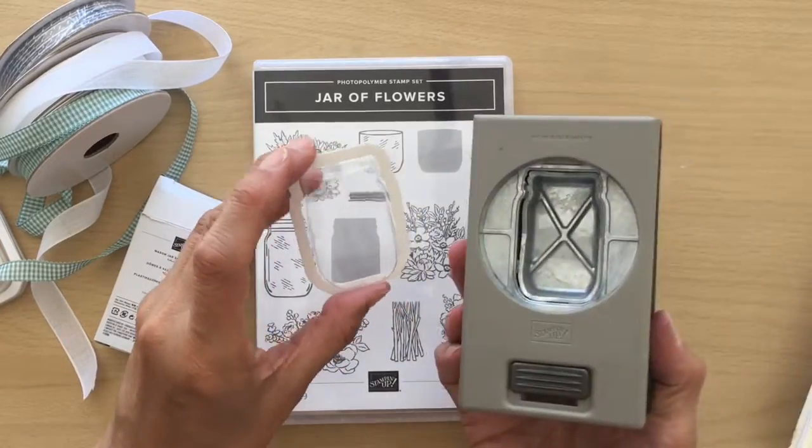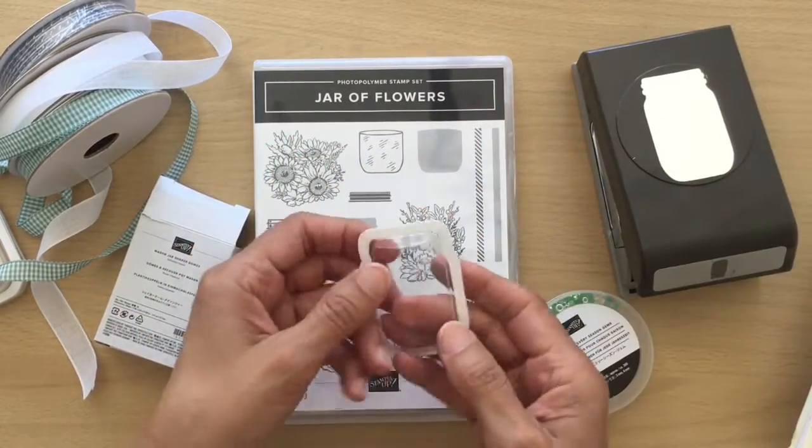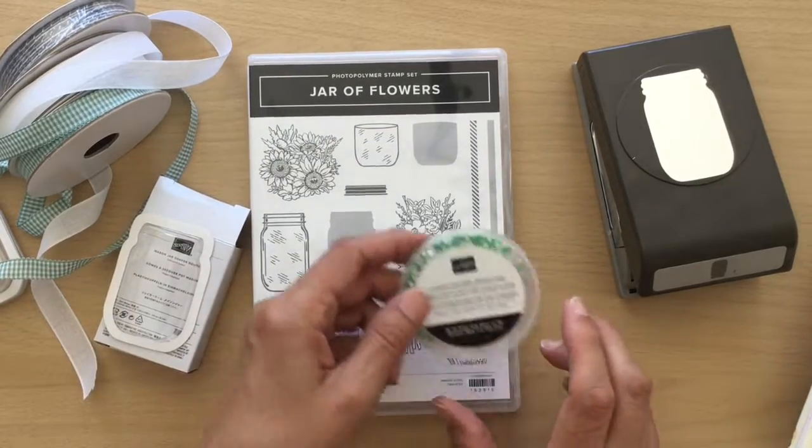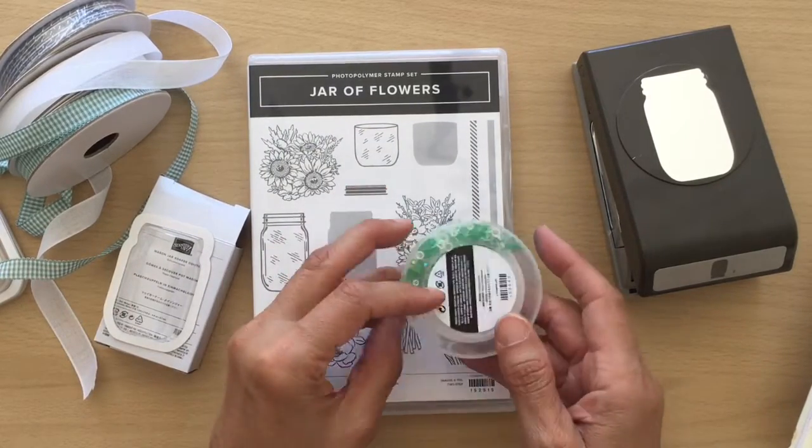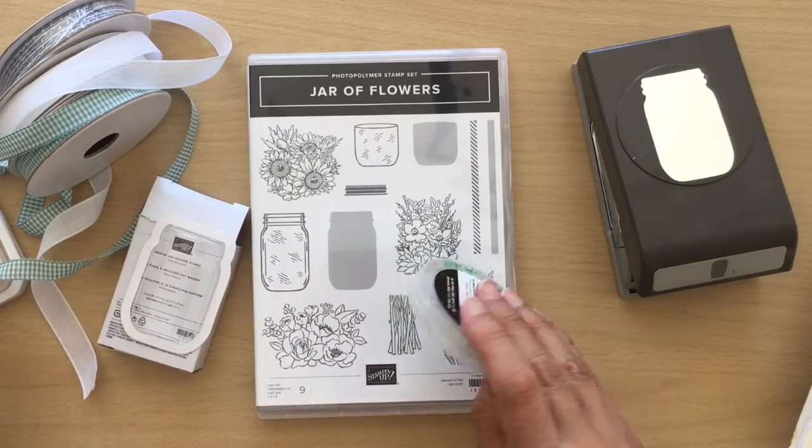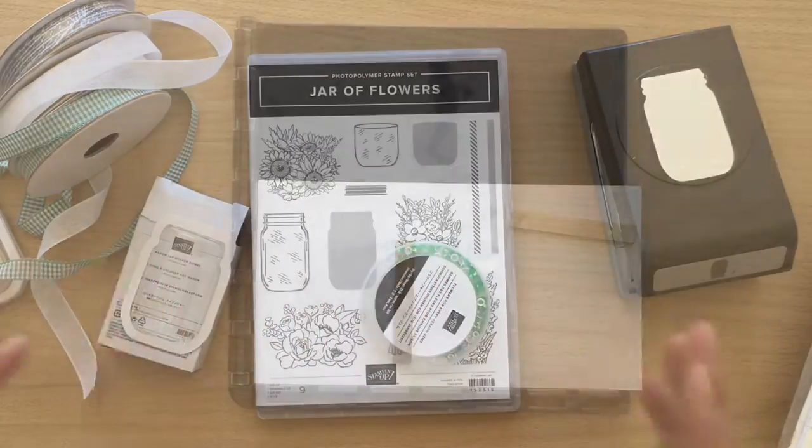These are the mason jar domes. You use your punch and then this will pop in, and we're going to be using one of these today so I can show you how to use those, and the Flowers for Every Season gems. These can go into your dome if you're going to be making a shaker card.